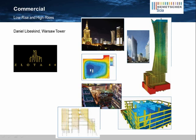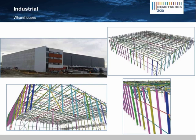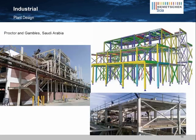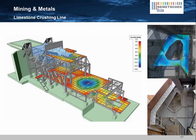We also have a number of customers that do work with high-end architects in Europe. This is an example of one of Daniel Libeskind's projects in Poland. And on the other side of the design spectrum, SIA Engineer is used for more industrial projects like warehouses, manufacturing facilities, plants like this new Procter & Gamble plant being built in Saudi Arabia, and mining.